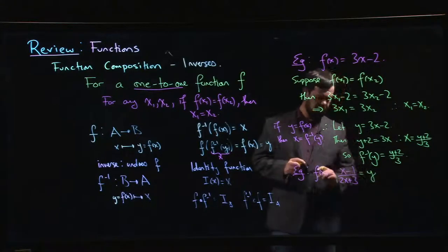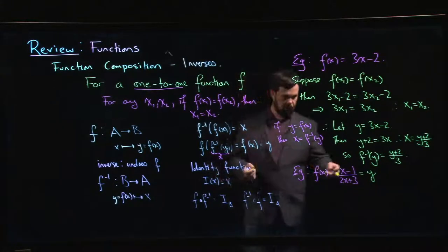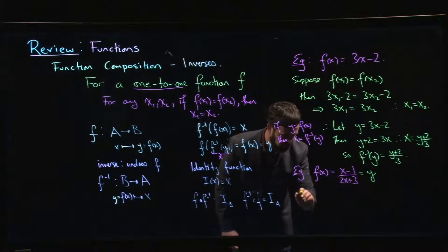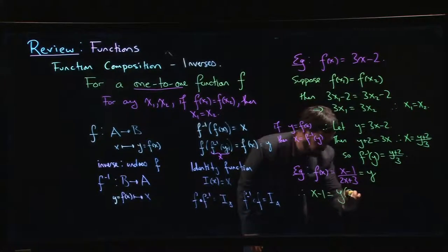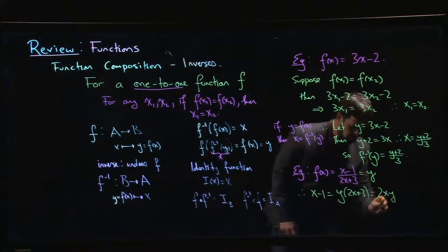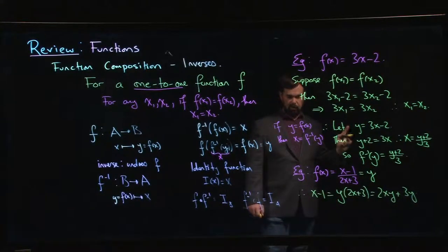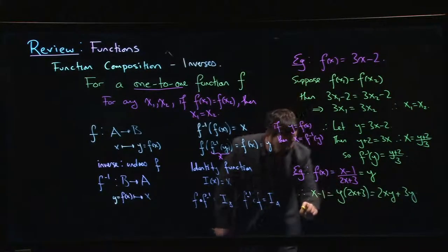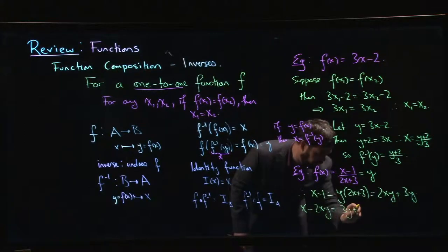So if we want to find the inverse, let's set that equal to y. Set it equal to y. Y is f of x. f inverse of y should be x. So we've got to take this equation, solve for x. So let's see. Okay. Let's cross multiply. x minus 1 is y times 2x plus 3, which is 2xy plus 3y. Okay. Now let's think for a second what are we trying to solve for. We're trying to solve for x. So let's get everything with an x on one side. x minus 2xy is equal to 3y plus 1.